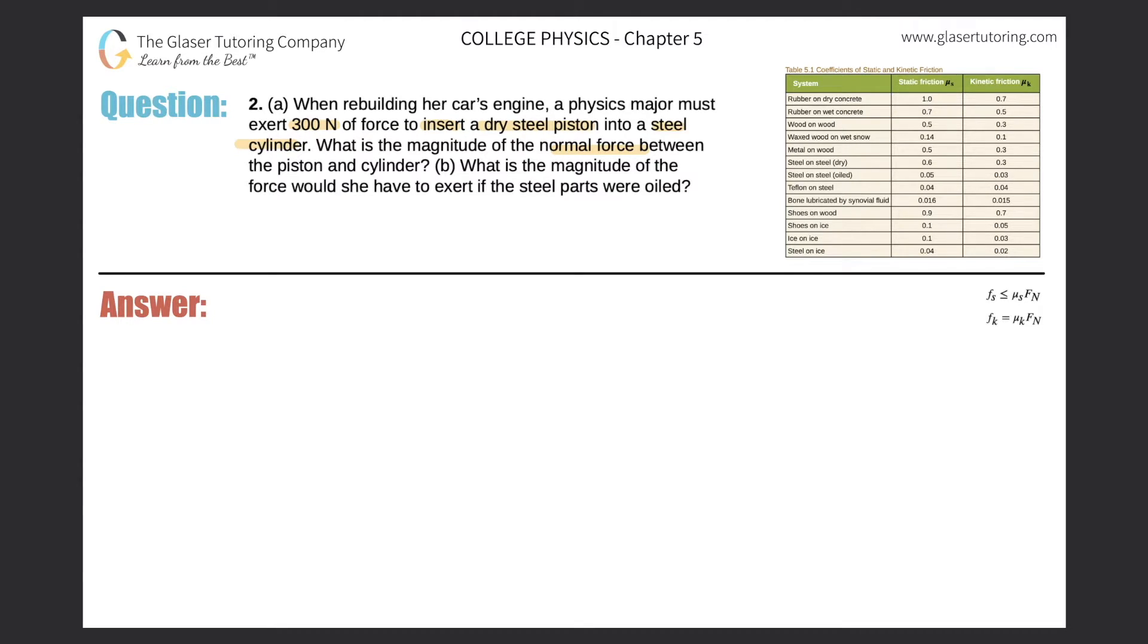Okay, so what they gave us is they gave us the frictional force, right? So the frictional force was 300 newtons. We now need the coefficient of kinetic friction, and if we go to our table, we've got to look up steel on steel dry. Right, so here it is, and we look up its coefficient of kinetic friction: 0.3.